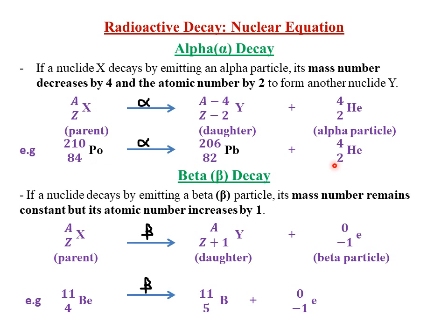For this equation to balance, helium has an atomic number of 2 representing the alpha particle. So we reduce the atomic number of polonium by 2: 84 minus 2 gives 82. Lead now has a mass number of 206 and atomic number 82. If you take 206 plus 4 you get 210, and 82 plus 2 gives 84 — so the equation is balanced on both sides.